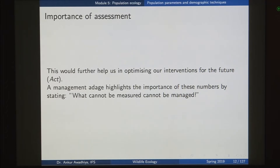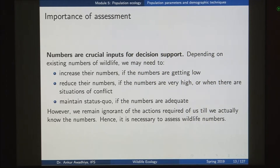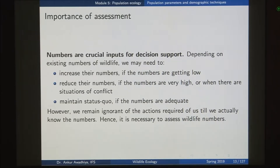If we do not have these numbers, if we are not able to measure how much population we have, how are we going to manage that population? The first question we ask is: we want to increase tiger numbers - so what is the current population of tigers and what is the population we want? Population assessment is also important because numbers are crucial inputs for decision support. We need to decide: do we want to increase tiger numbers because they are getting low, reduce them because of conflicts, or maintain a status quo? We remain ignorant of the actions required of us until we actually know the numbers.